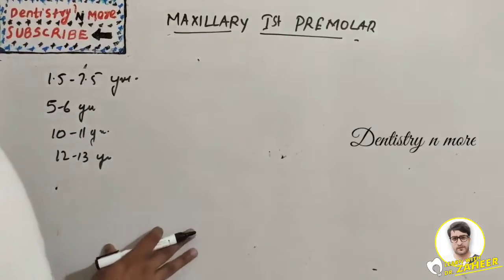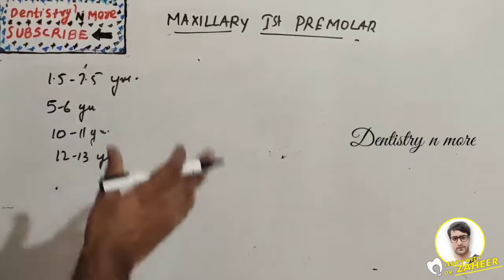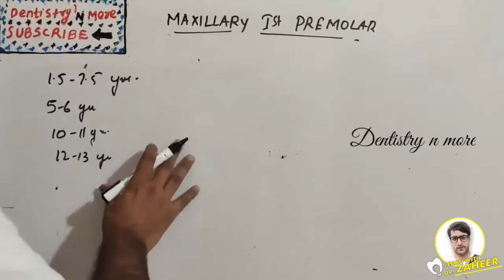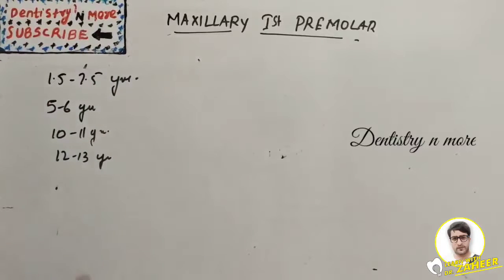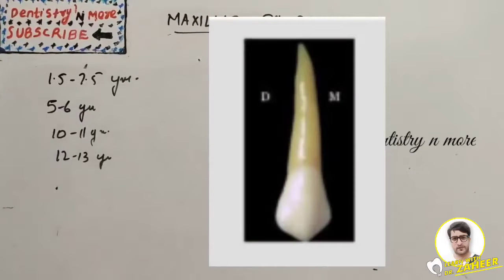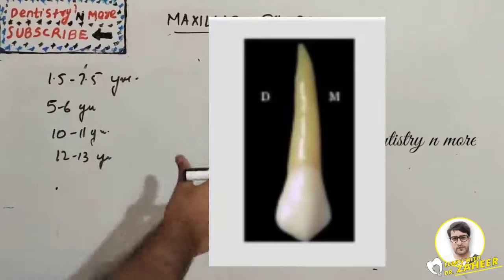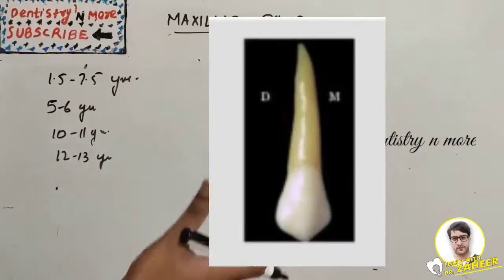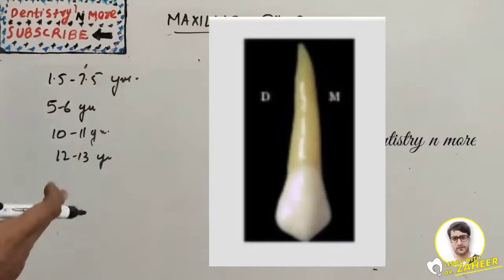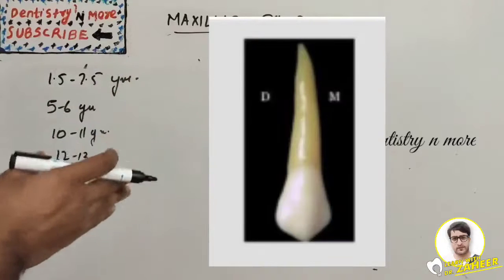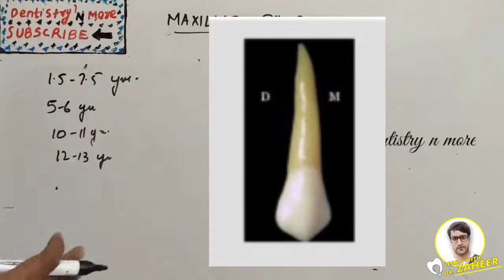Posterior teeth have an occlusal surface in place of the incisal surface. Starting with the buccal side — not labial side — the crown is pentagonal in shape, as you can see here. The crown closely resembles the maxillary canine and second premolar. The mesial margin joins the mesial occlusal slope to create an obtuse mesial occlusal angle.